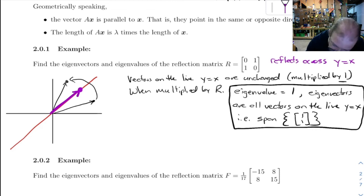If you look at vectors that are orthogonal to that line, if you were to reflect this across the line, you're going to get this guy over here. Now what did it do there? Reflecting it just changed the sign of X and Y.